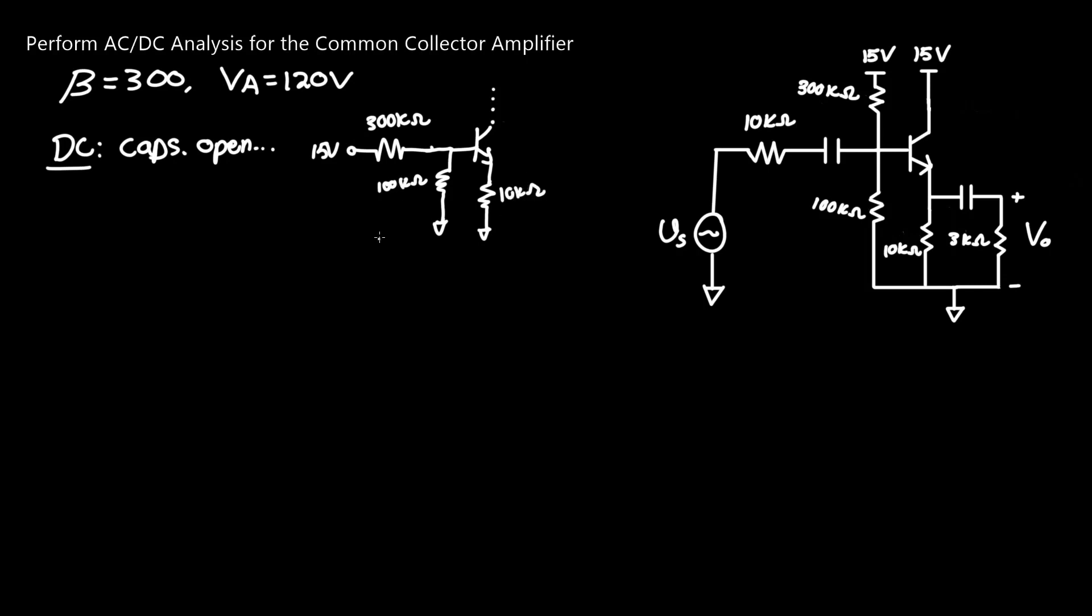To find the equivalent Thevenin resistance of 300 kilo ohms and 100 kilo ohm resistors, all you have to do is put them in parallel, since under AC conditions they're technically both connected to ground. R-Thevenin equals 300 kilo ohms in parallel with 100 kilo ohms, which gives 75 kilo ohm resistance.